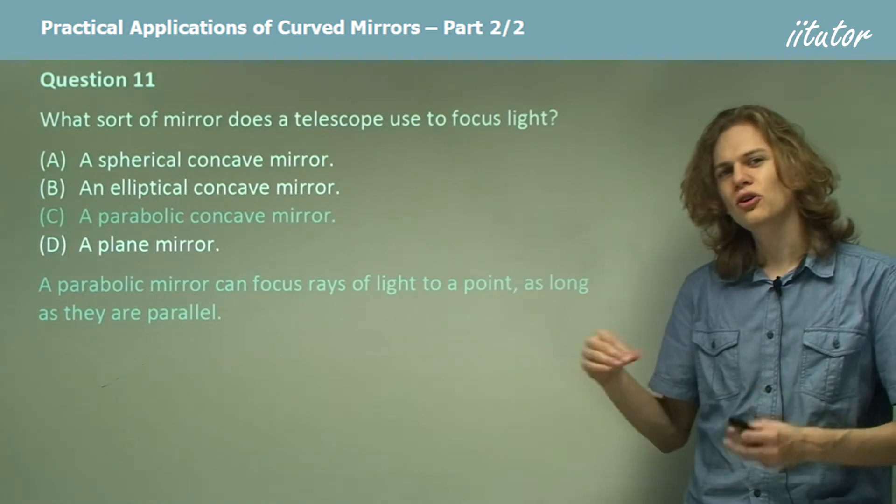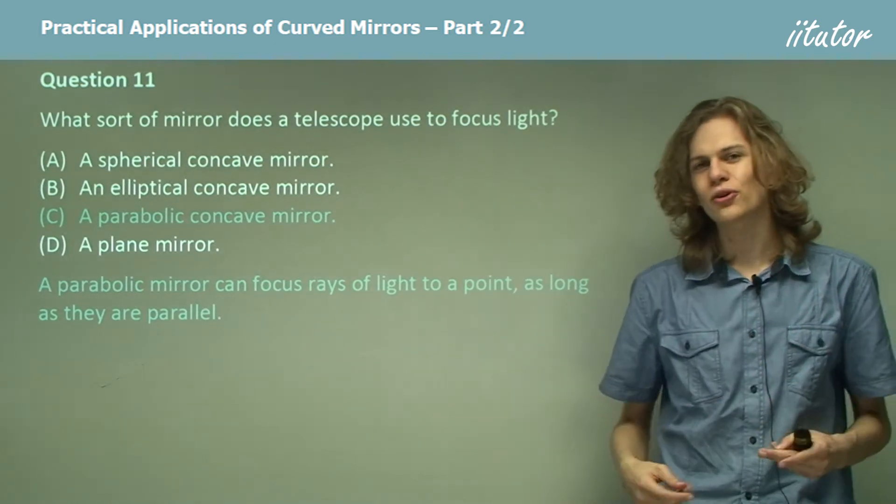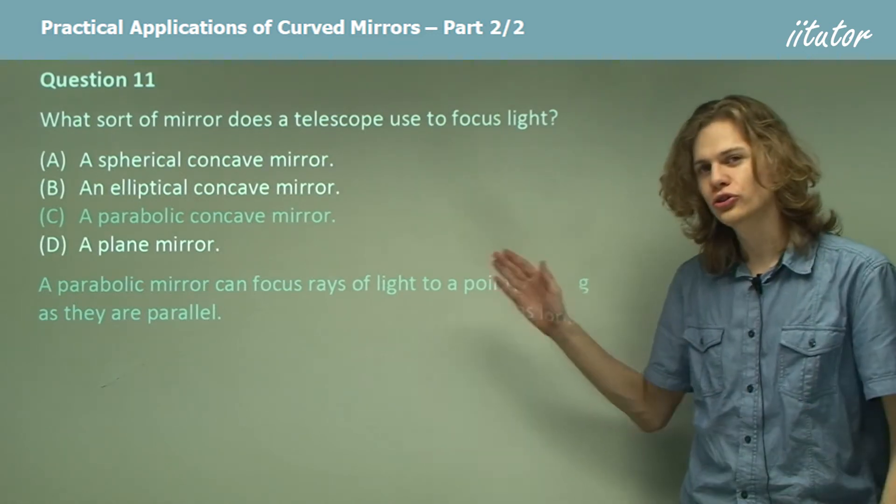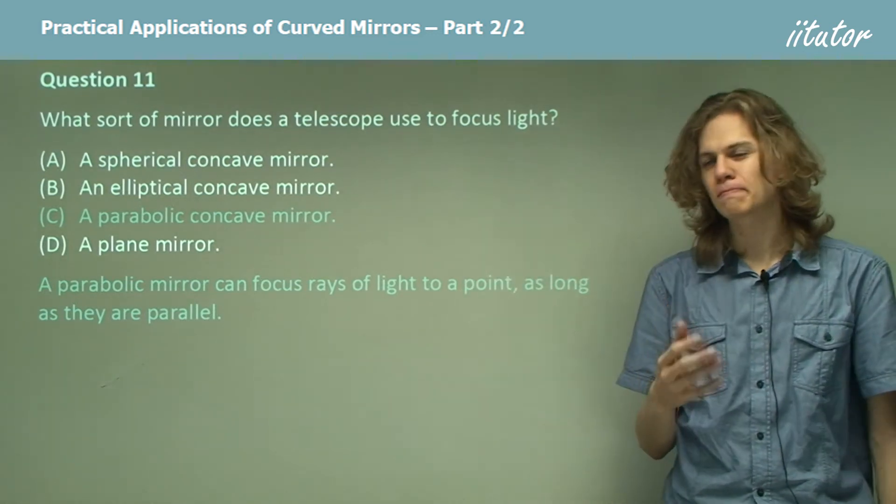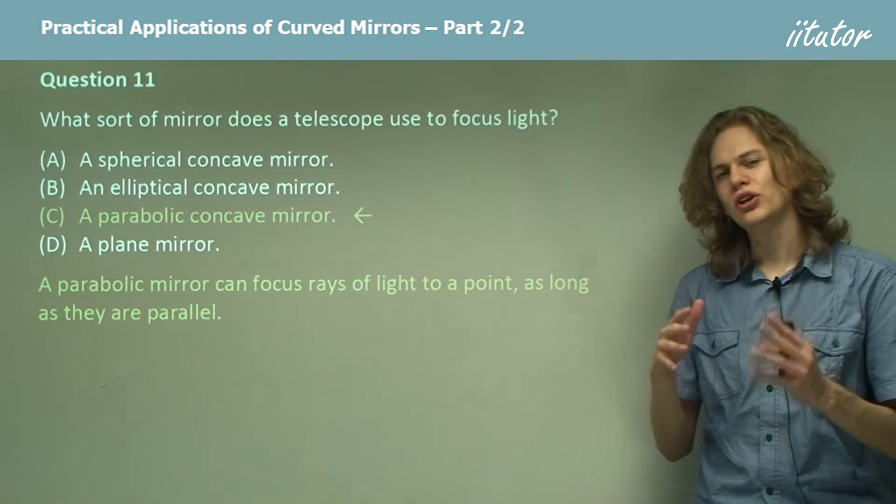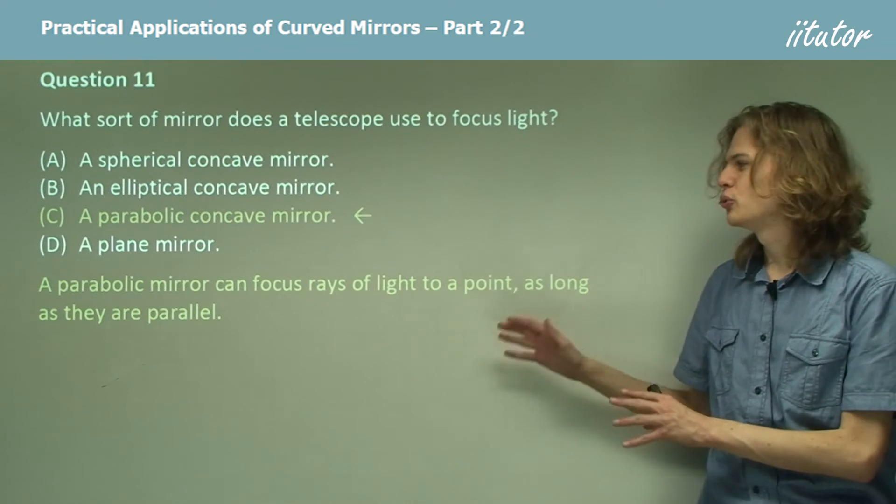So in a parabolic concave mirror, we don't have another focus. That focus is at infinity. Instead, we have just one focus close to the mirror, and this is the one that we're interested in. So in this case, a parabolic mirror will focus rays of light to a particular point, so long as those rays are parallel.